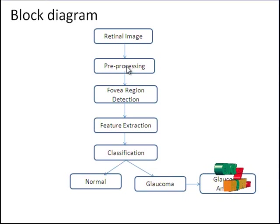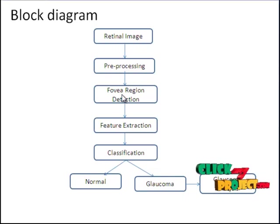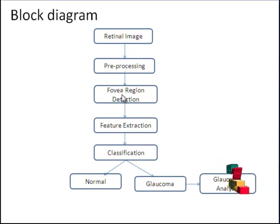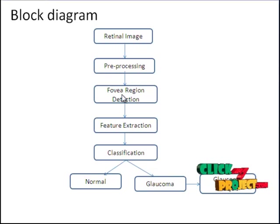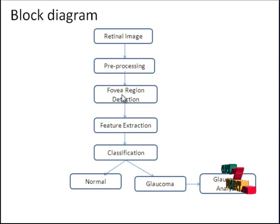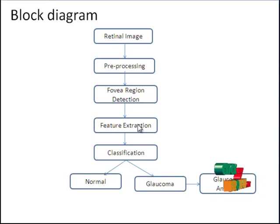The separated green image is passed to the fovea region detection. We find the fovea region of the retinal images. For detecting the fovea, we find the optic disc of the retinal image. From the optic disc, we locate the 2D distance, extracting the green channel from each image and performing the initial estimation of the background by means of a large square median filter. That detected region is then passed to feature extraction.